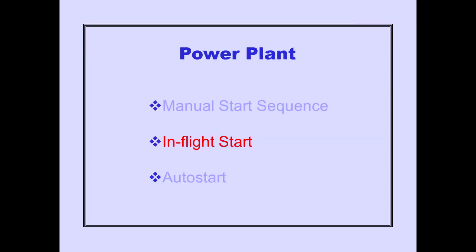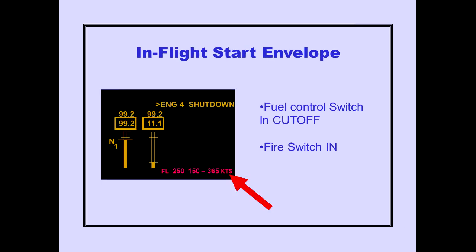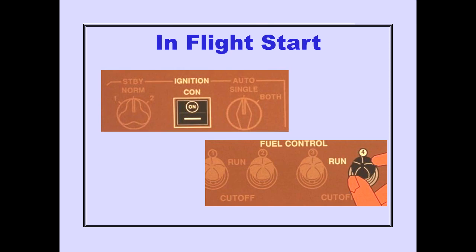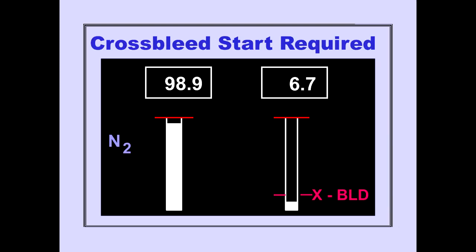Now, let's look at in-flight start. If an engine is shut down in-flight, the in-flight start envelope is displayed on ICAS when the fuel control switch is in cutoff and the fire switch is in. The in-flight start envelope airspeed range displayed is for the current flight level or the maximum start altitude, whichever is lower. Placing the fuel control switch to run provides the fuel and ignition to relight the engine. The cross-bleed enunciator and fuel-on command indicator are displayed when the airplane's airspeed is not high enough for a windmilling start. A cross-bleed start is required.